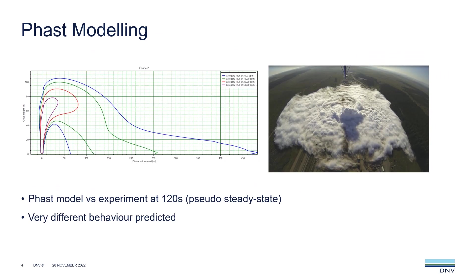We've set this case up using the buried pipeline model. On the left is a side view after 120 seconds, compared with the experiment after 120 seconds. As you can see, the FAST prediction is quite different — it's initially elevated, goes quite high, and doesn't touch down until it's a good distance downwind. Whereas the experiment is grounded almost instantly and spreads in all directions.